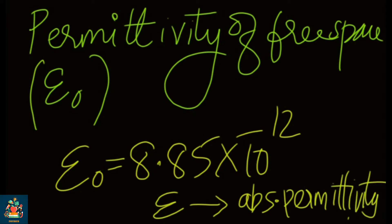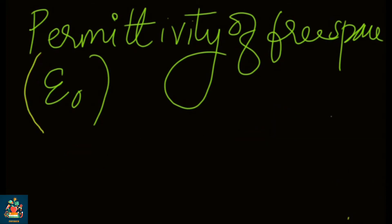Epsilon zero means permittivity of free space. We will discuss its unit, dimensional formula, and how to determine the value of 8.85 into 10 raise to minus 12. Depending on the material, permittivity varies.